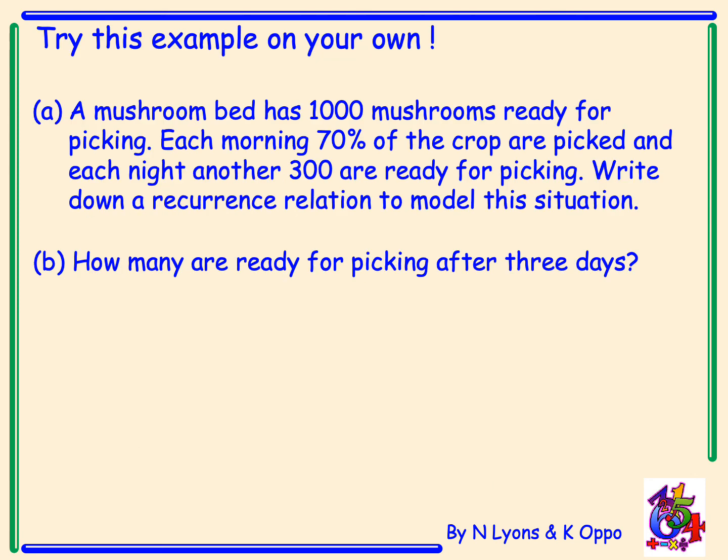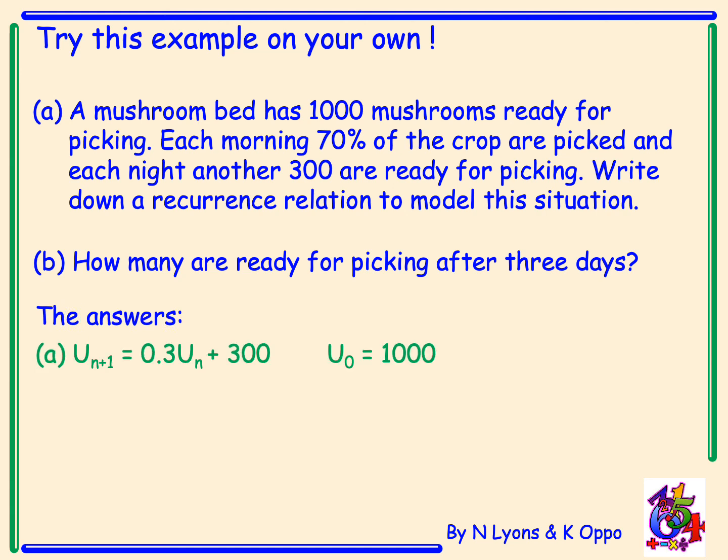Now try these examples on your own — please pause the video. The answer for part A: the recurrence relation is u_{n+1} equals 0.3·u_n plus 300, with u_0 equal to 1000. For part B, the amount ready for picking after 3 days is 444 — that is, U3 equals 444.